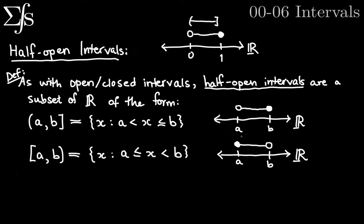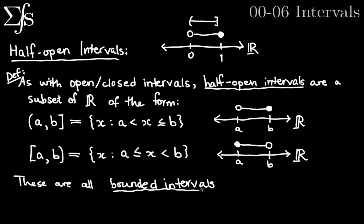So these are how we describe a whole bunch of different types of intervals. We use parentheses to show that it's not including the endpoint, and we use the bracket to denote that it is including the endpoint. These are all types of what are called bounded intervals — they don't go on forever. They just stop at A and stop at B. Anything to the left of A doesn't matter for our interval; anything to the right of B doesn't matter for our interval.